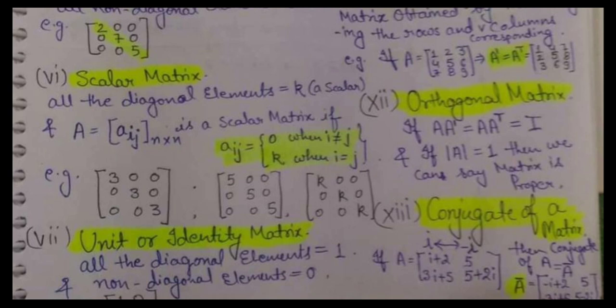The additional condition for scalar matrix is that all the principal diagonal elements should be the same. For example, if they are 3, all will be 3, 3, 3 as you can see in the first example. In the second one, I have written 5, 5, 5 — all the principal diagonal elements are equal to 5. In the third example I have shown it in general with K. This kind of matrix is known as scalar matrix, which is also a diagonal matrix.